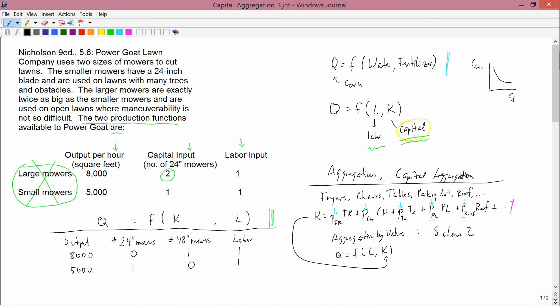This is completely clear. There is no ambiguity. It describes exactly what's going on in the problem statement. But it's not f of k and l. So it's q equals f of 24-inch mowers, 48-inch mowers, and labor. So you've got three arguments to the production function, not just two arguments. You're not trying to aggregate 24-inch and 48-inch mowers.